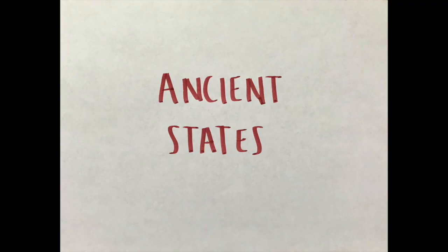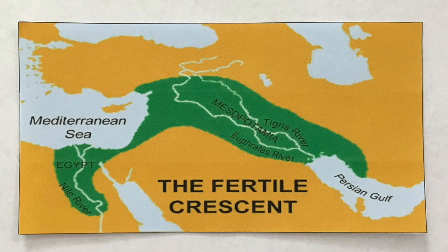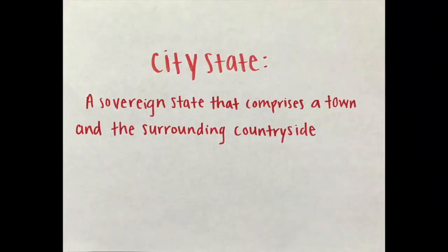Ancient States: The development of states can be traced to the ancient Middle East in an area known as the Fertile Crescent, which formed an arc between the Persian Gulf and the Mediterranean Sea. The first states to evolve in Mesopotamia were known as city-states. A city-state is a sovereign state that comprises a town and the surrounding countryside.